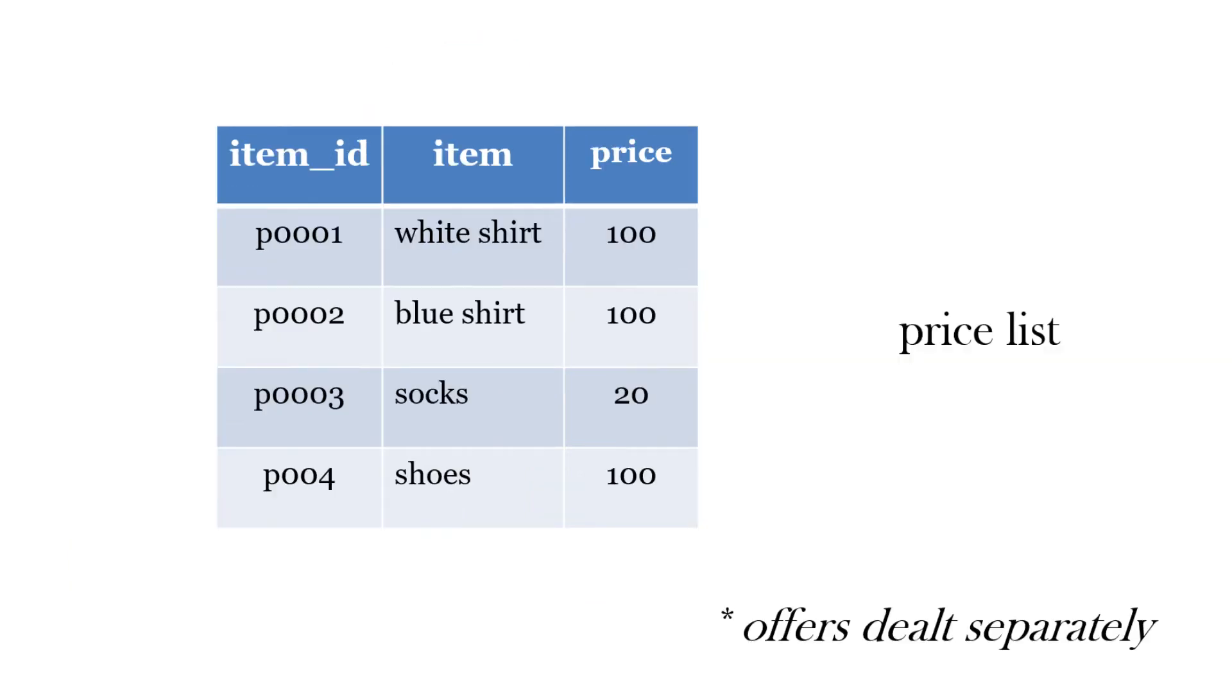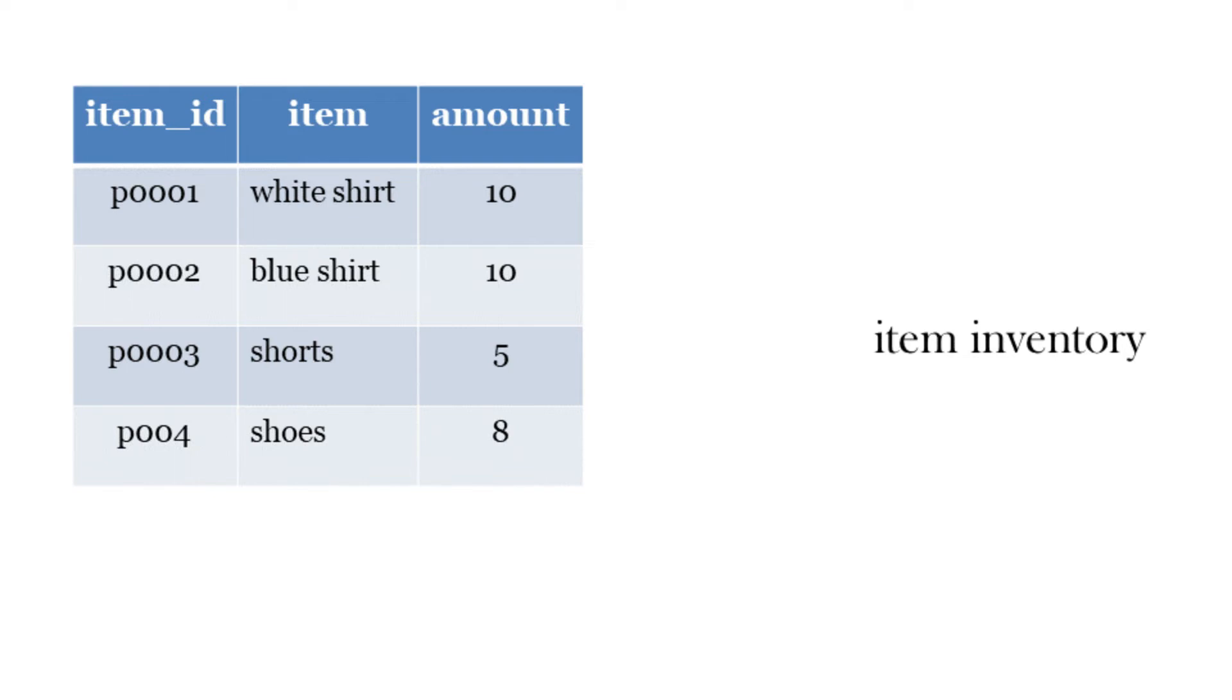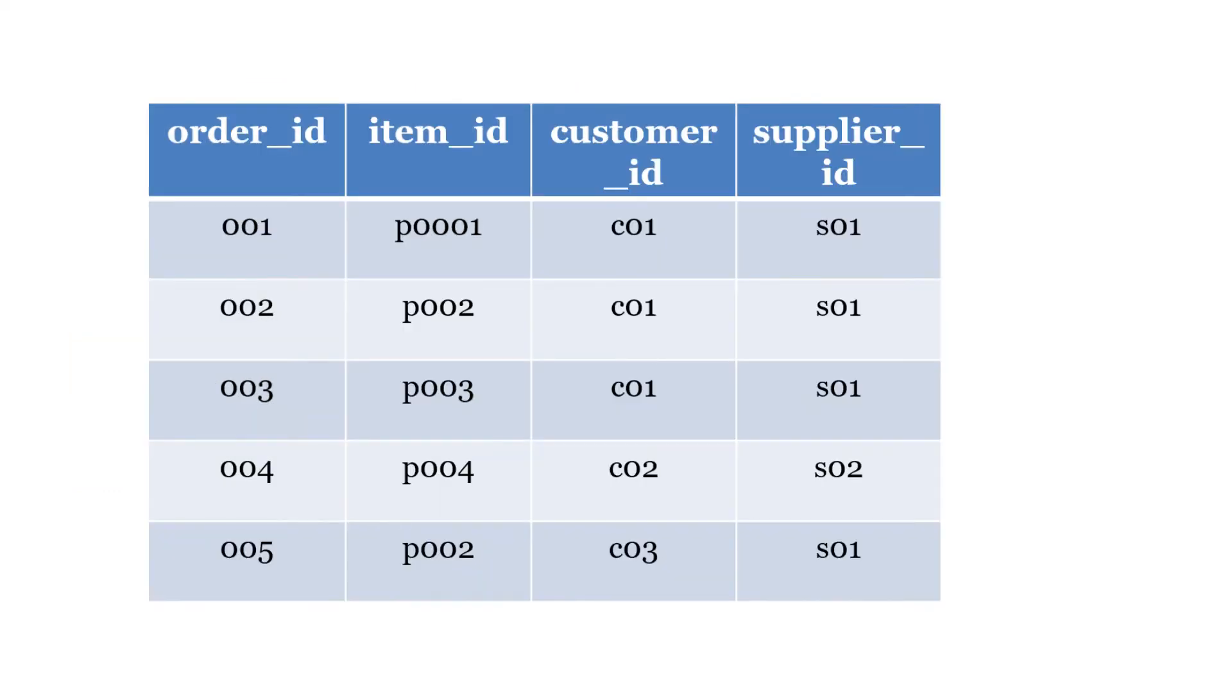We can use examples in real life. For example, a price list would have the unique identifier, the item, and a price. An item inventory would have the item identifier, the item, and how many we have in stock. In the end, we could have an order table with the order ID, item ID, customer ID, supplier ID. We might have some more details about the order, like the date. Essentially, this is how we've cut from having details that should be in other tables down to our table.